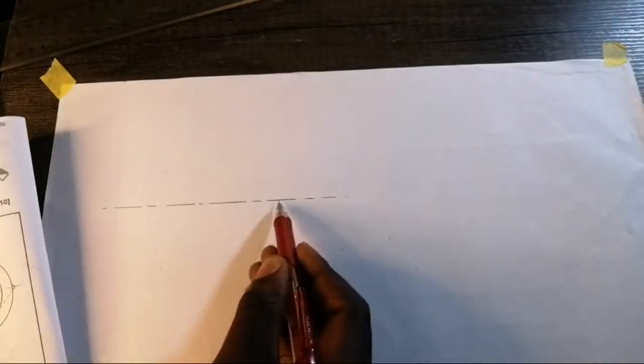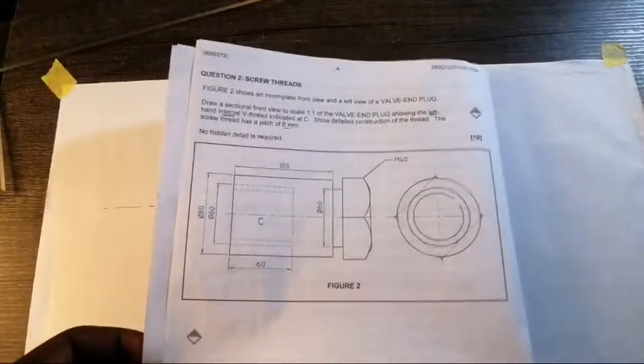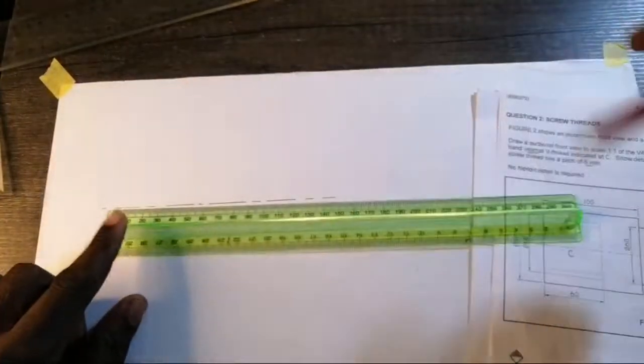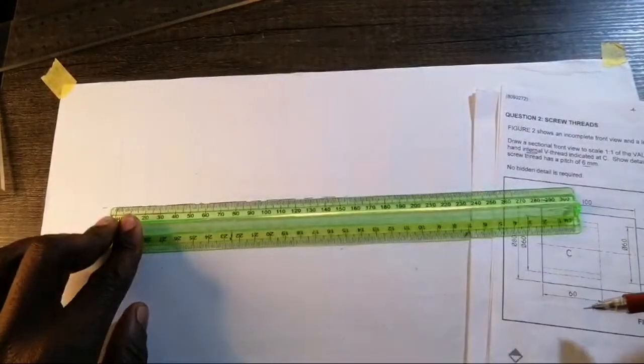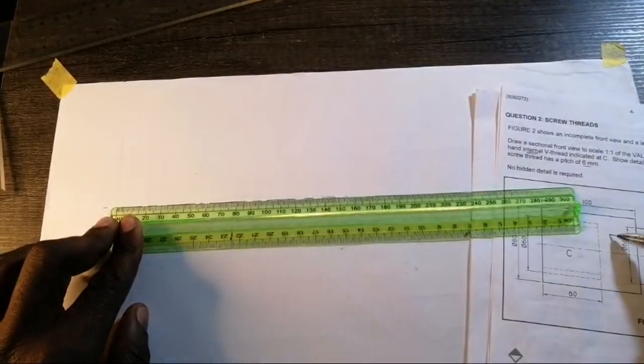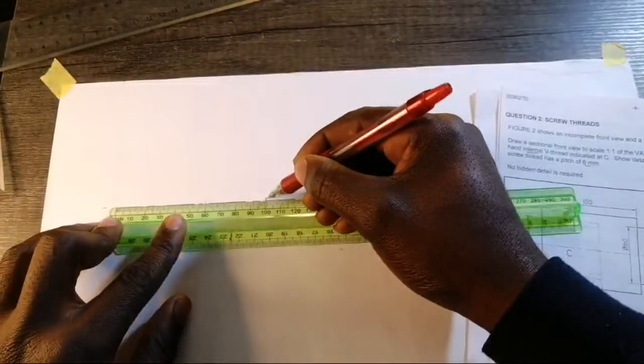Okay, scale is one to one. So from here going this direction I can measure a dimension of how much? 100, isn't it? I've got a 60 which is this one and 100 which is that one. So 60 is ending here, 100 is ending there.